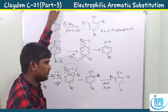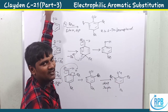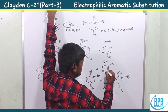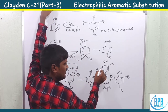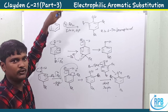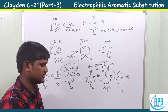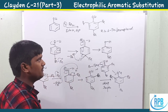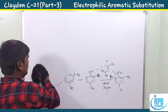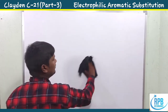Some students are confused about how the third substitution occurs after the second. Since the previous positions are already blocked by electrophiles, the third bromine attacks the remaining ortho position. This completes the mechanism of 2,4,6-tribromophenol formation. Whenever phenol is treated with bromine in ethanol, it produces tribromophenol. The same mechanism applies for chlorination, producing 2,4,6-trichlorophenol.